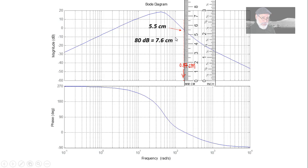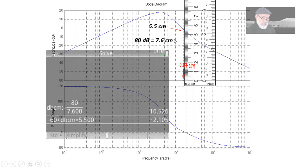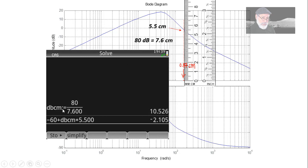I want to know at 5.5 what is the value in decibels. We do the same. We know that decibels per centimeter, 80 by 7.6, that is 10.5 decibels per centimeter. We multiply that by 5.5 centimeters and add that on top of negative 60. And we read that the value here in decibels is negative 2.1.